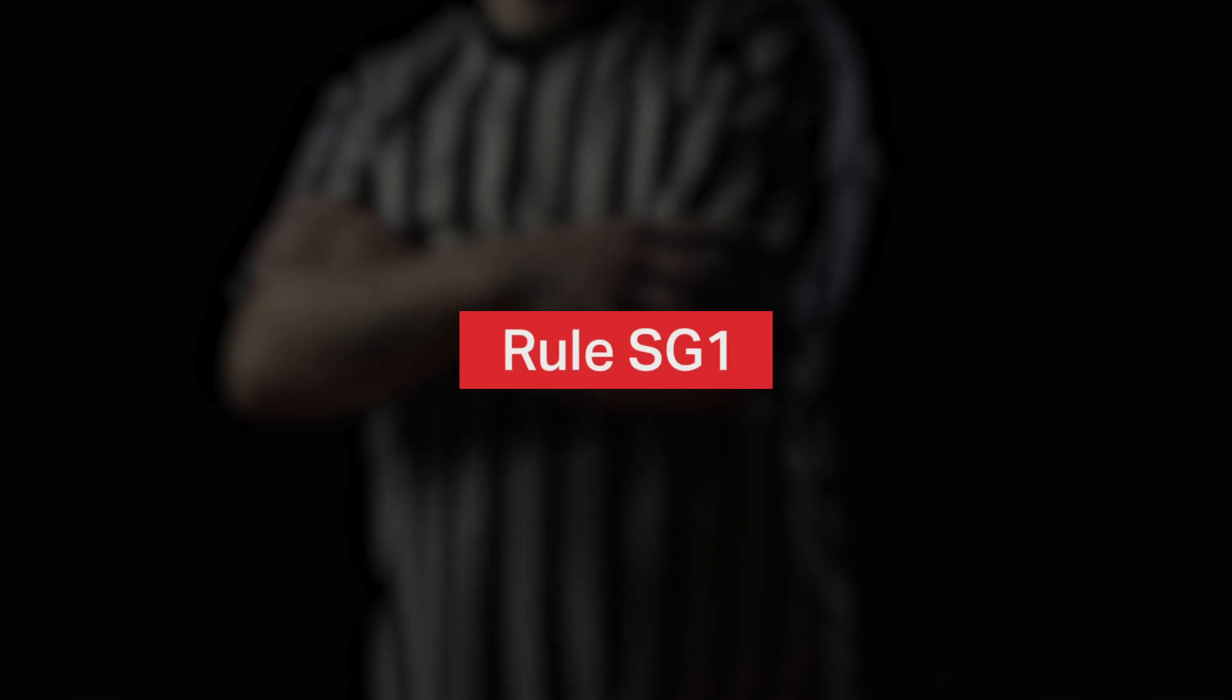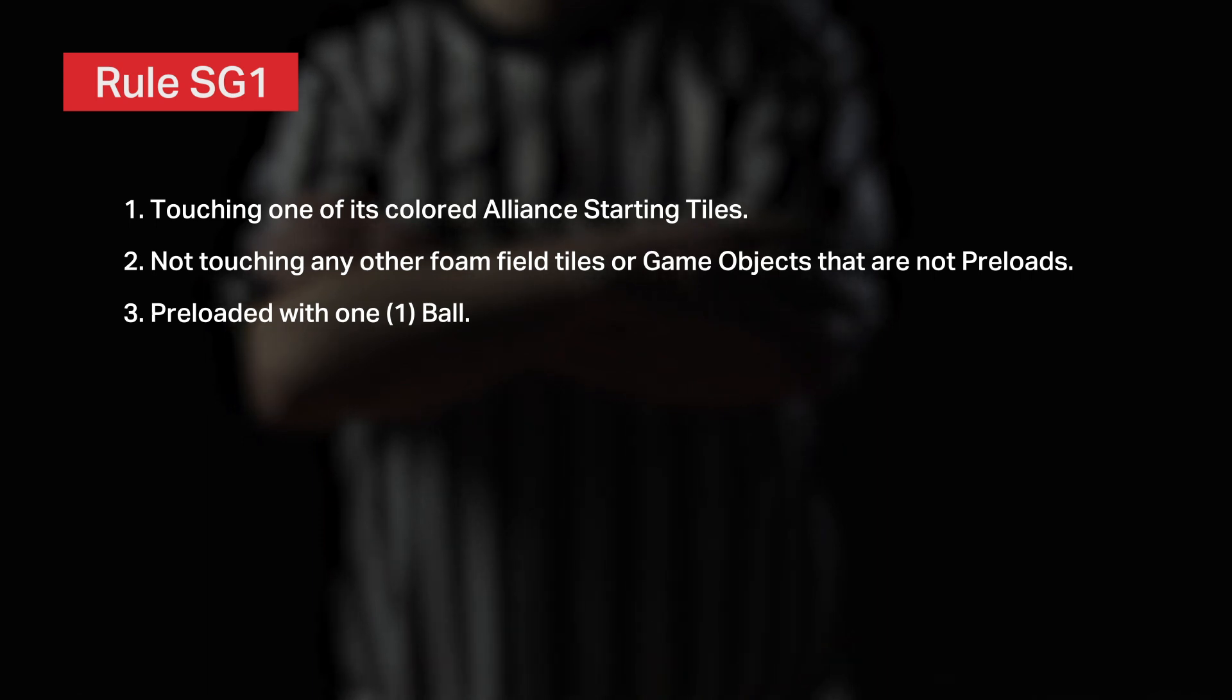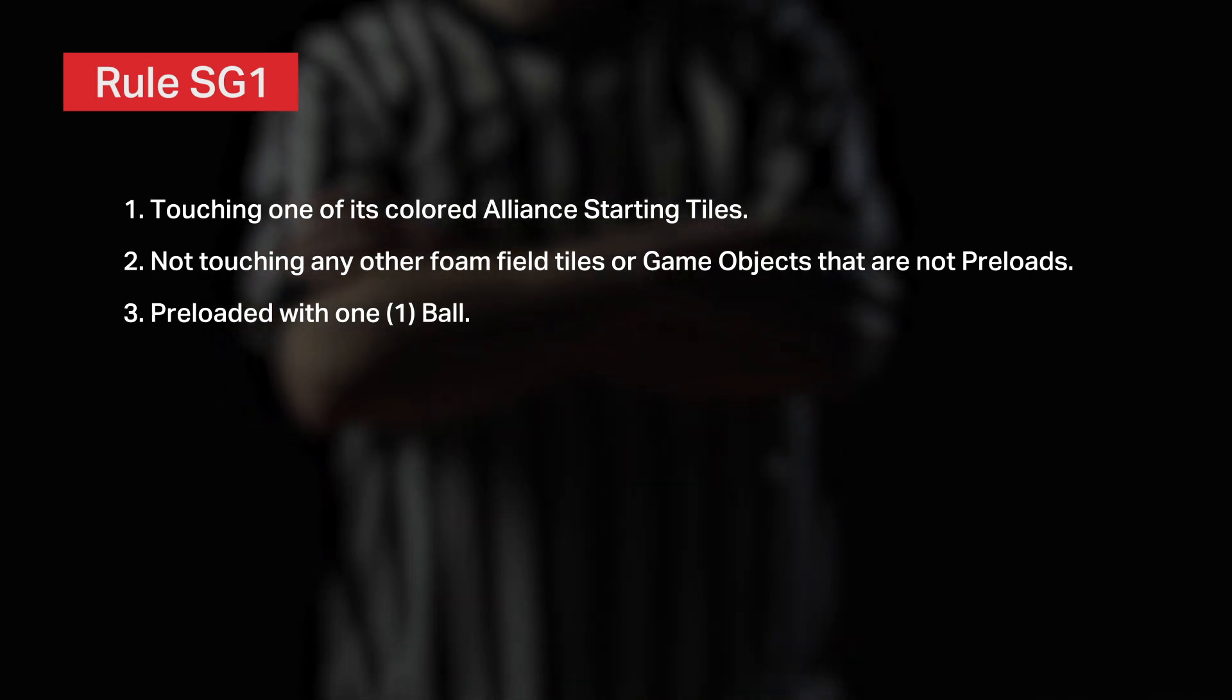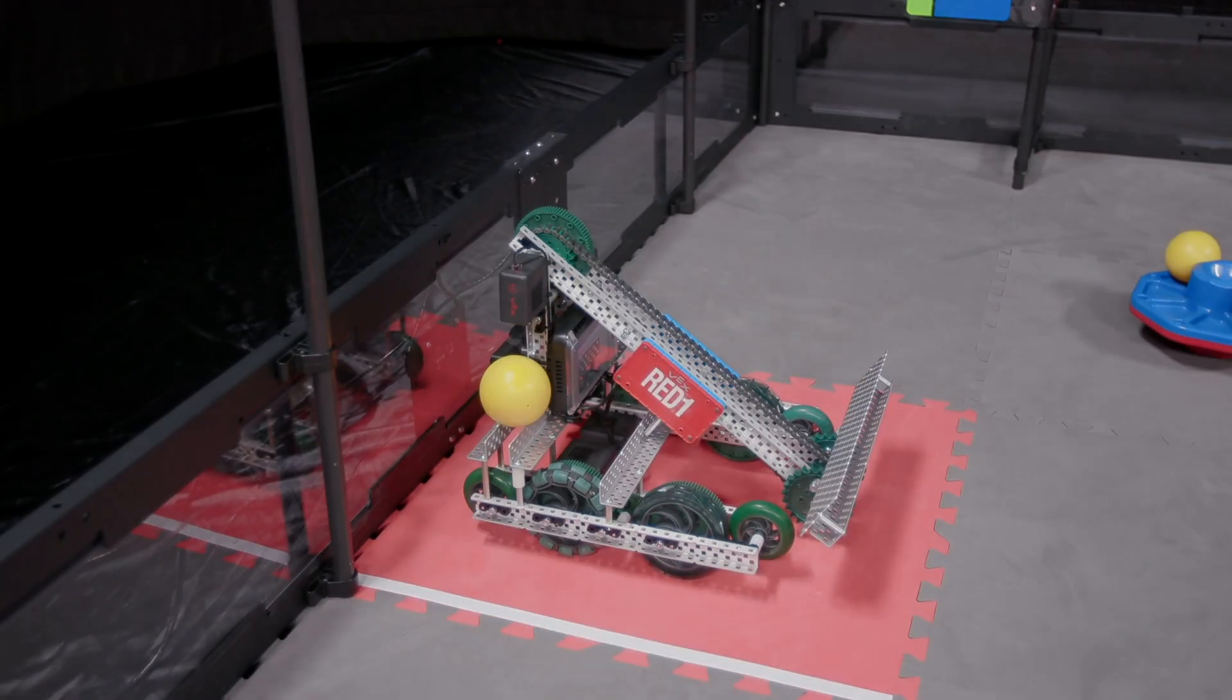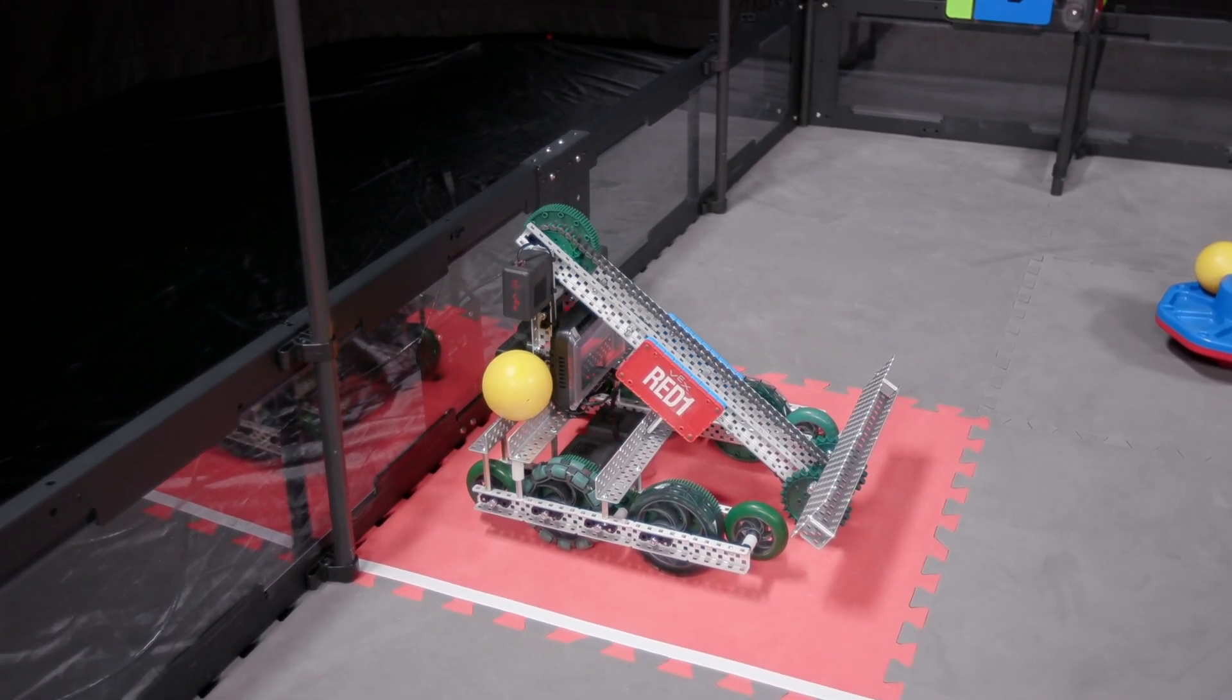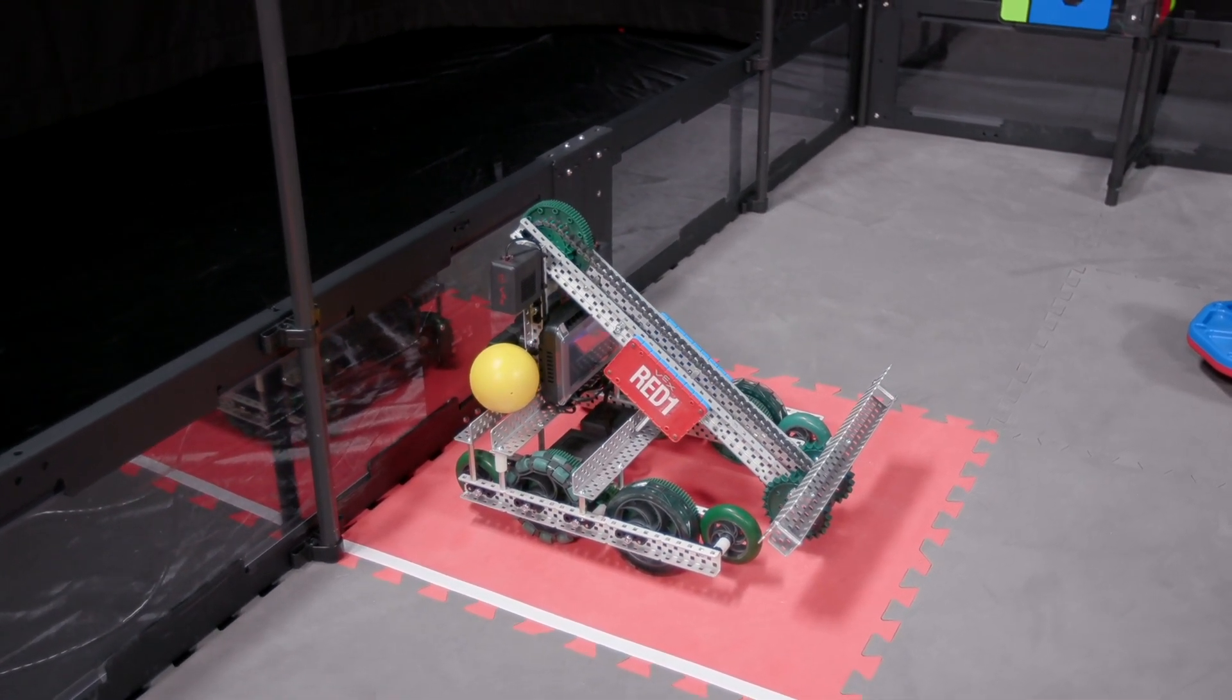And finally, at the start of a match, each robot must satisfy the requirements put forth by SG-1. This means that they must be touching their alliance's starting tile, not touching any other foam field tiles, and not touching any scoring object other than their preload. A ball is considered to be legally preloaded if it is touching the robot, not touching another robot, and is fully within the field perimeter.